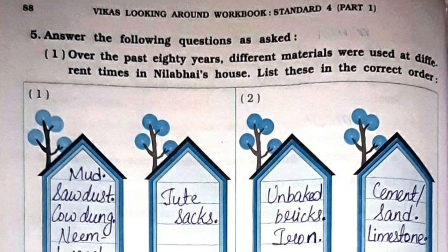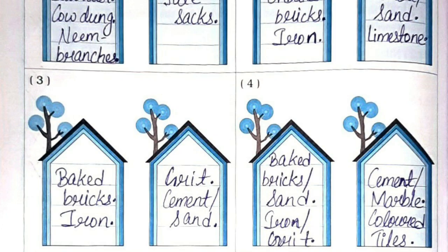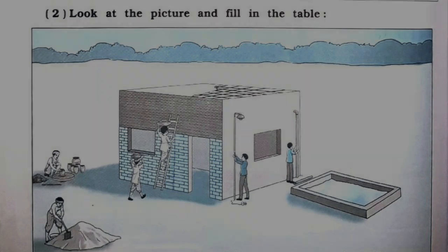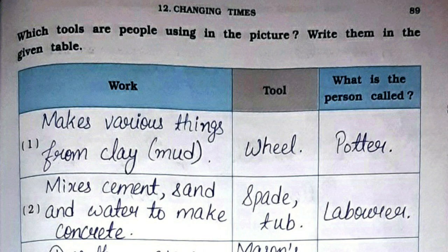Question five, answer the following. First: Over the past 80 years, different materials were used at different times in Neela Bhai's house — list these in the correct order. You can see those materials and complete them in your workbook. Second: Look at the picture and fill in the table — which tools are people using in the picture, and write them in the given table.